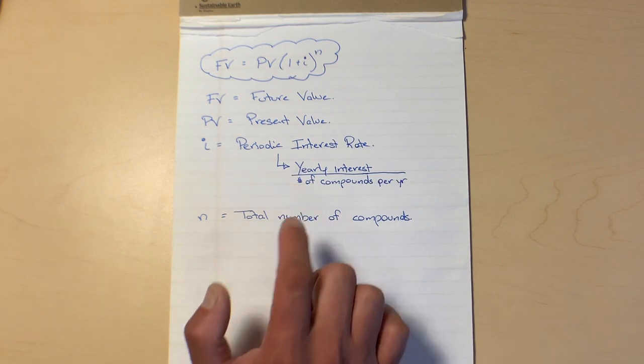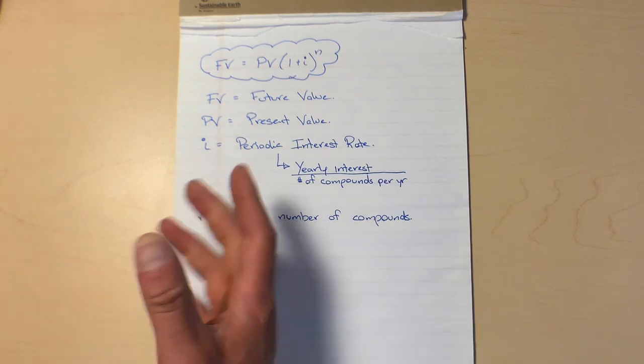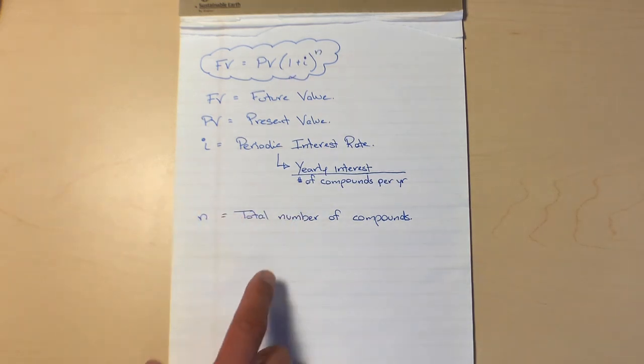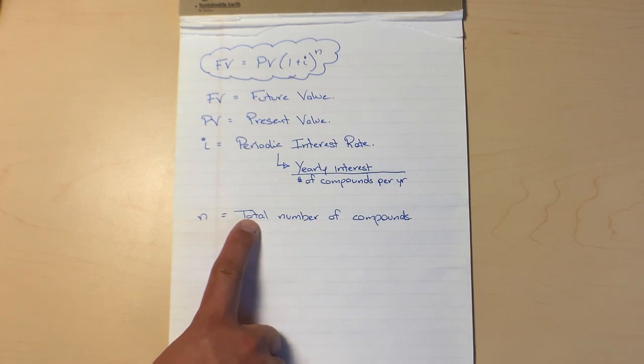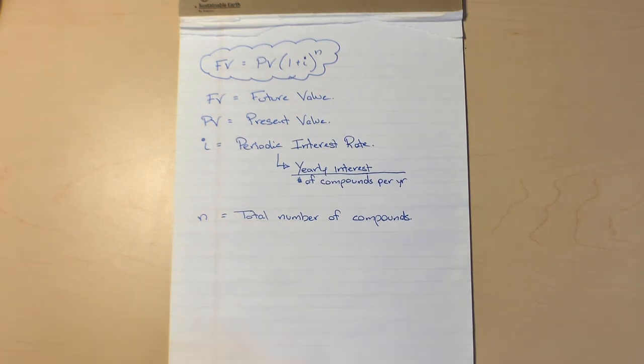So the yearly interest divided by the number of compounds per year. And then our n is the total number of compounds in the entire time of this investment. So if we have two compounds a year and our investment is going to last five years, we're going to have an n of 10. So let's kind of try an example and just see how that feels.